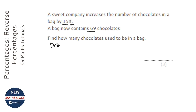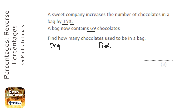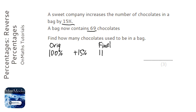The best way of doing this is to think about what you would do if you were given the original amount, and then we just need to do the opposite of that. So we first want to find out the multiplier. We start off with 100%, we increased it by 15%, and we now have 115%.